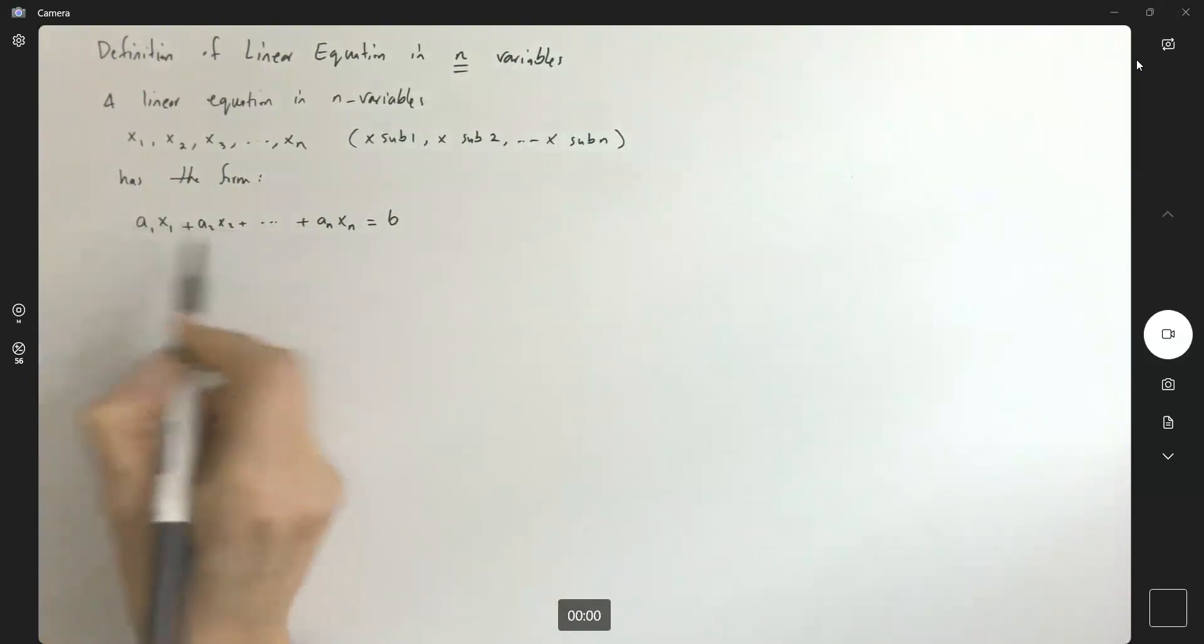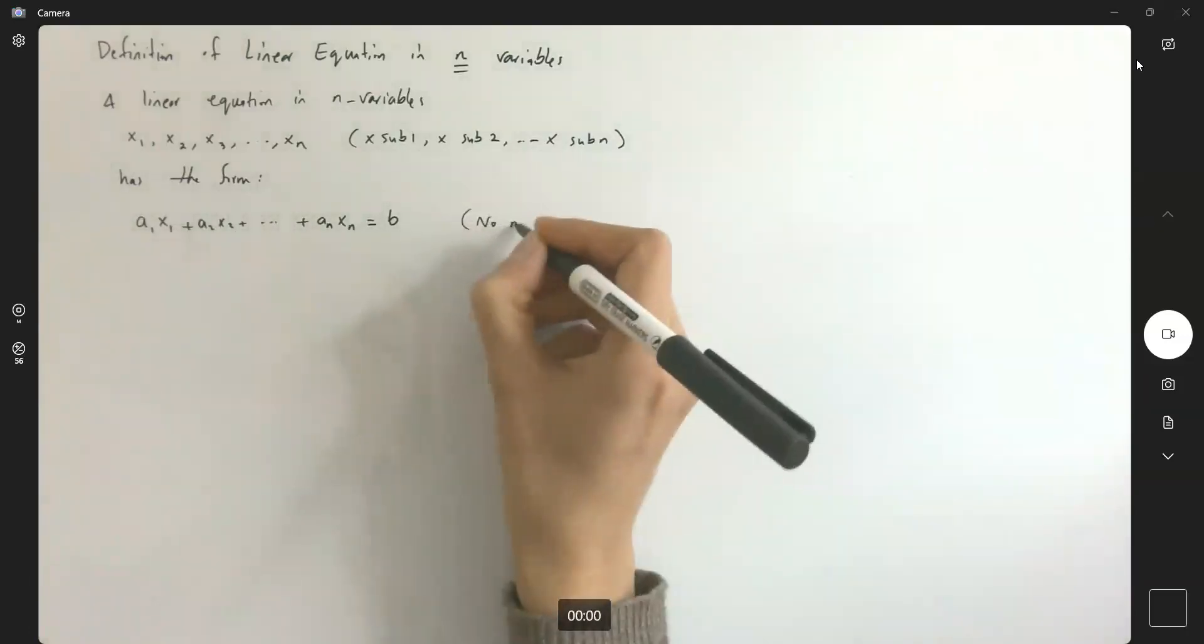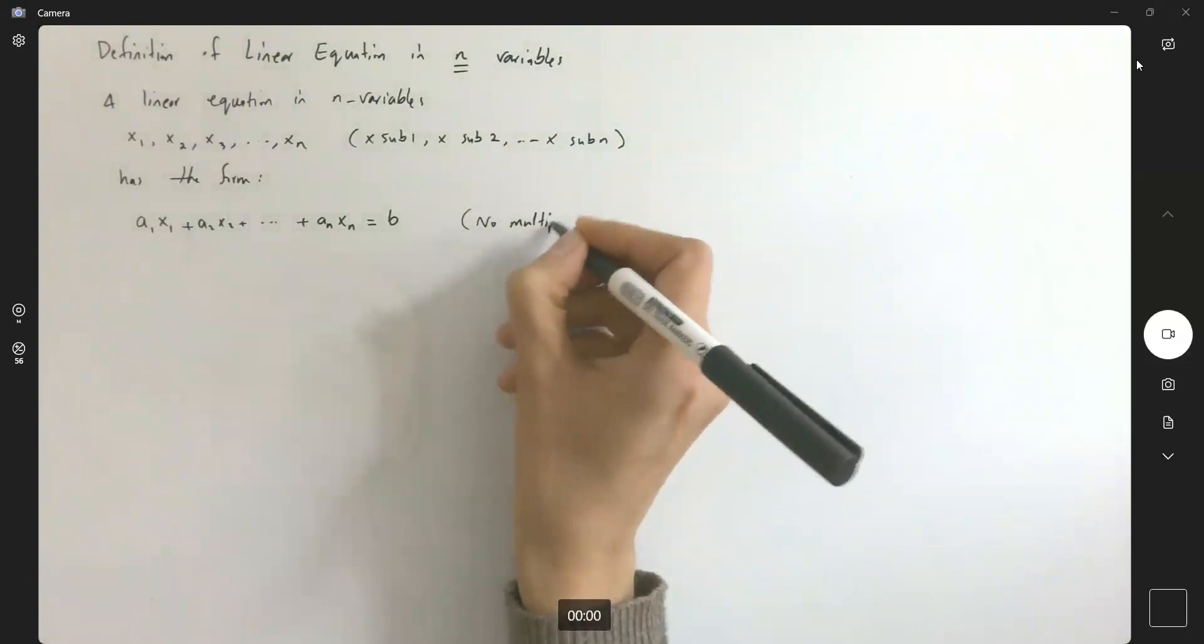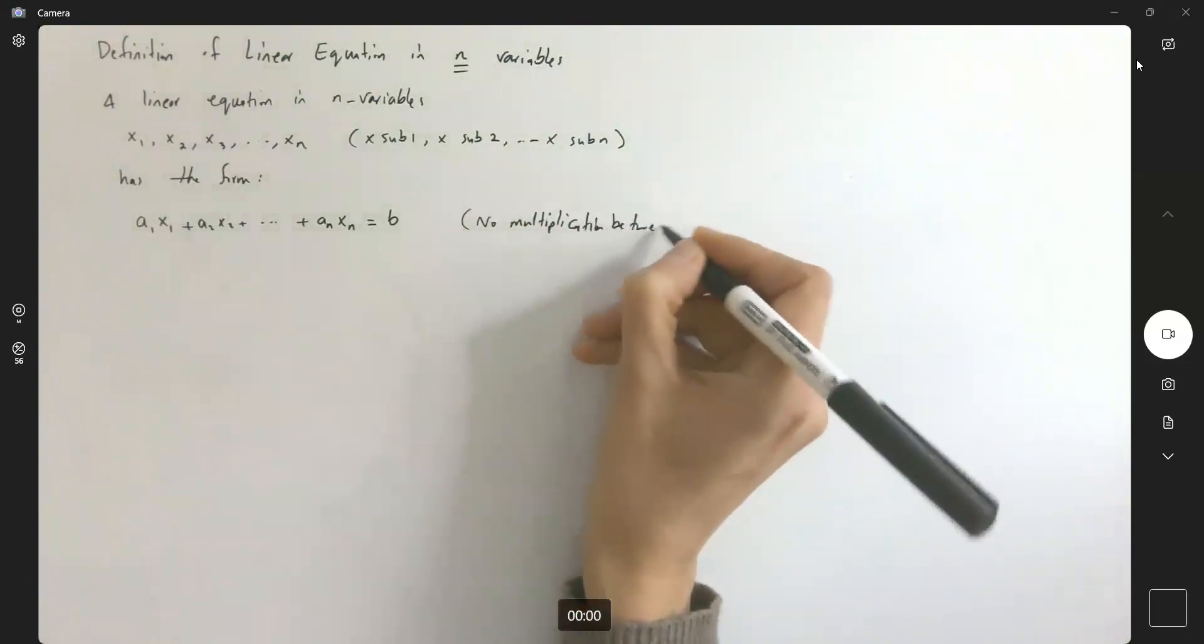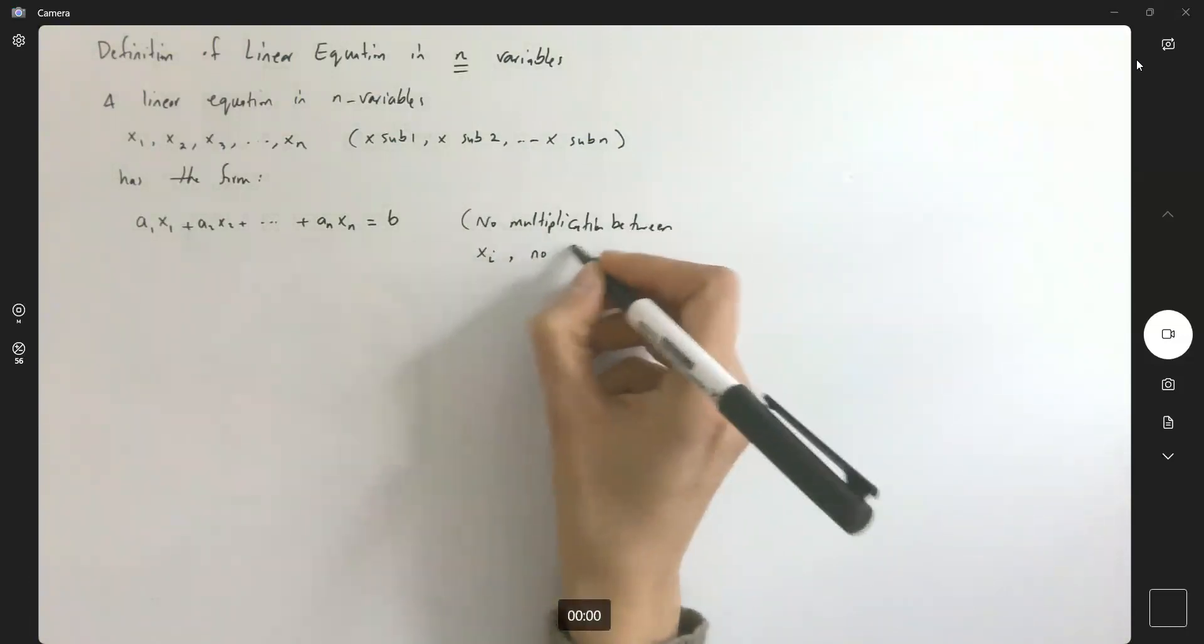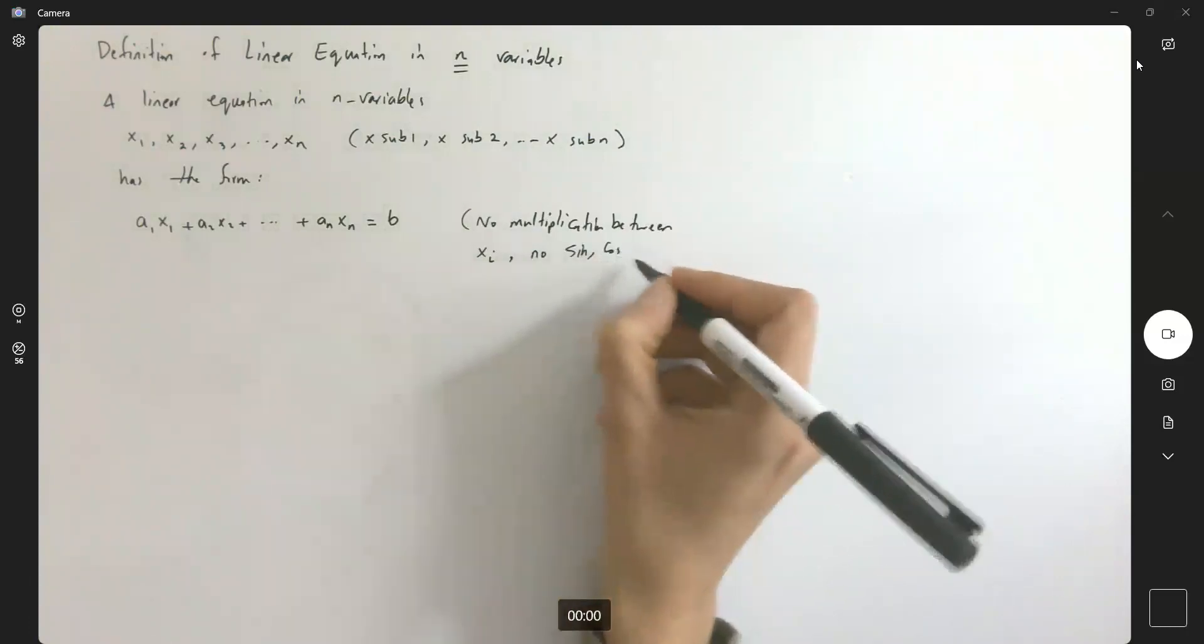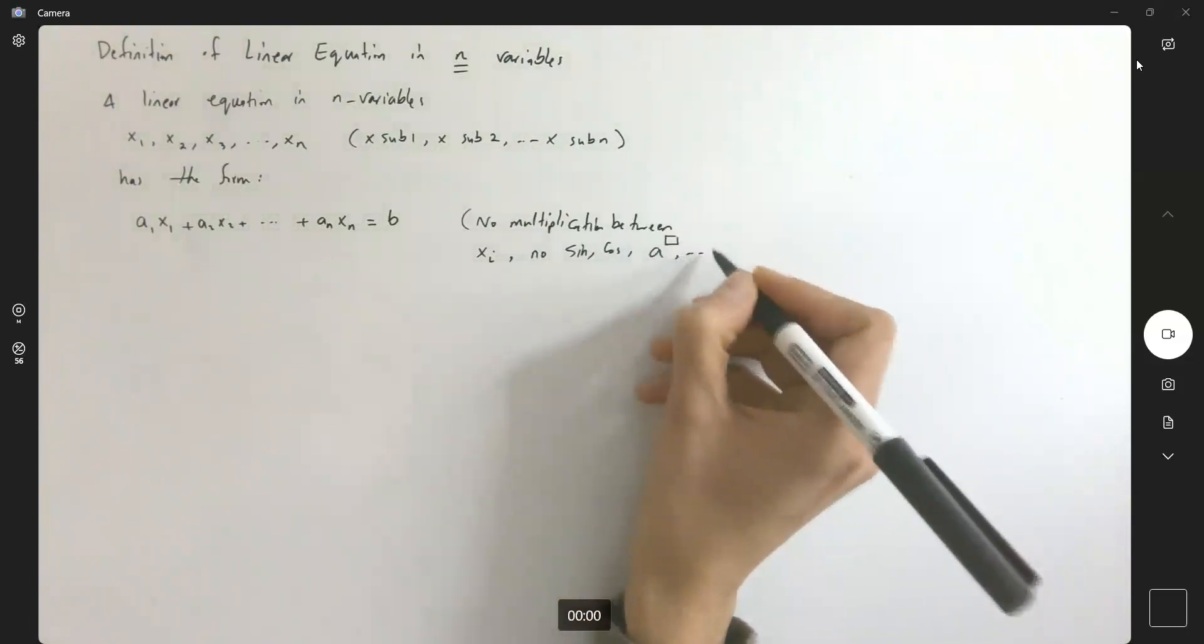So as you can see, there is no multiplication between these variables. They are all added together. No multiplication between x sub i's. No sine involved, no cosine involved, no exponential form, a to some power, and so on.